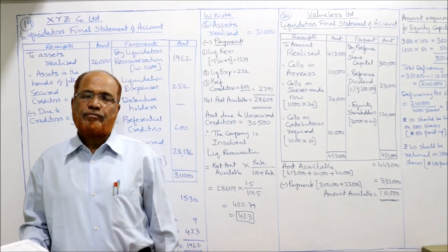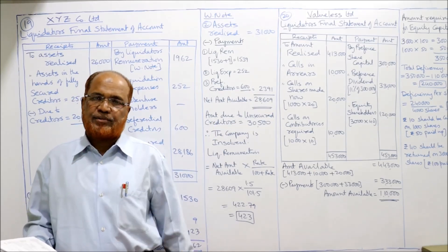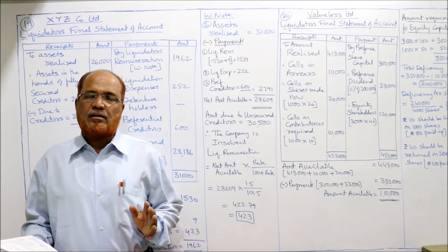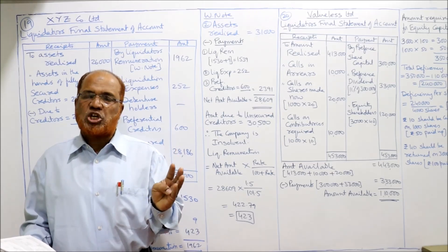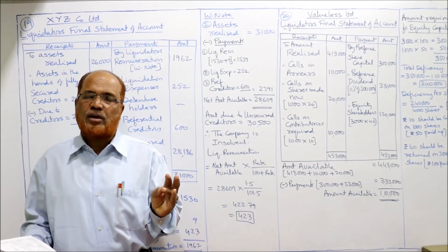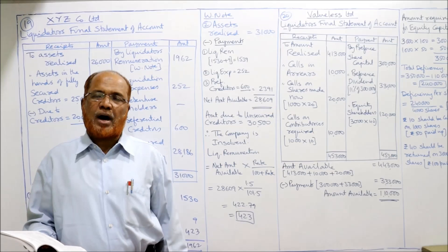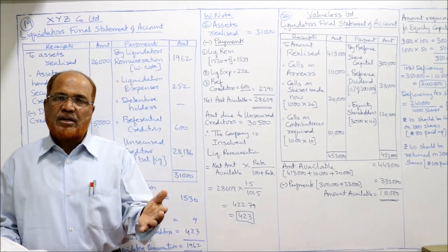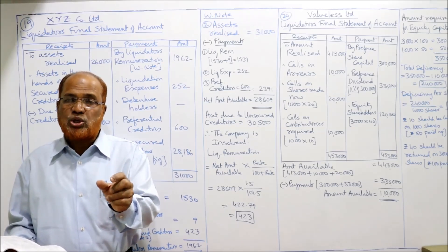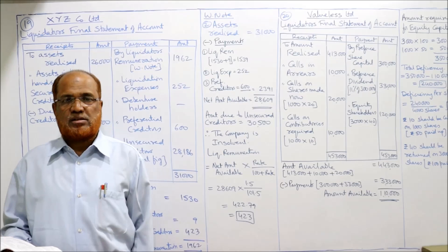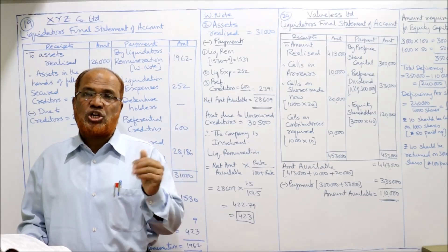Amount left after discharging all liabilities is 4,13,000. This means the company is solvent — the liquidator has already paid remuneration, liquidation expenses, debenture holders, and unsecured creditors. This 4,13,000 should now be used to make payments to shareholders. First, preference shareholders must be paid their capital and arrears of preference dividend.